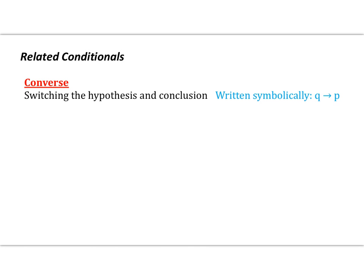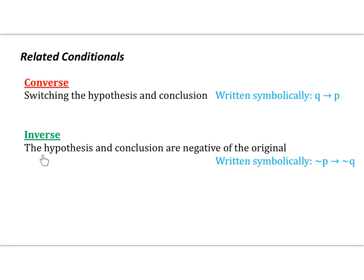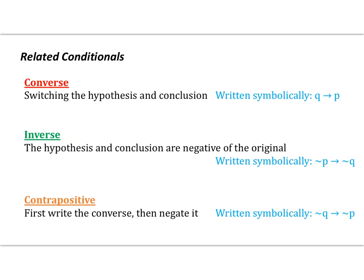Let's look at some other related conditionals to the original. First, the converse: switching the hypothesis and conclusion of the original, so Q implies P. Next, the inverse: the hypothesis and conclusion are both negated, so not P implies not Q. And the final related statement is the contrapositive: first write the converse — switch hypothesis and conclusion — then negate it. Symbolically, not Q implies not P.